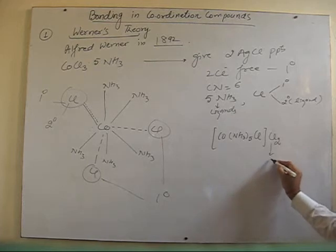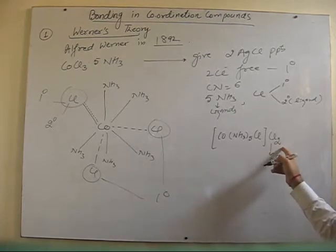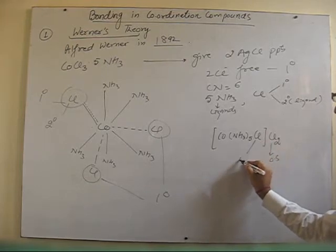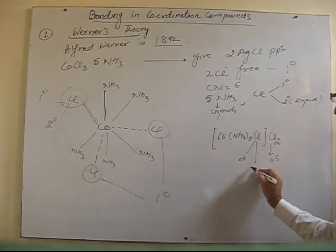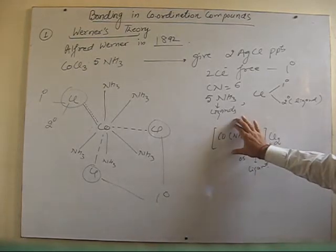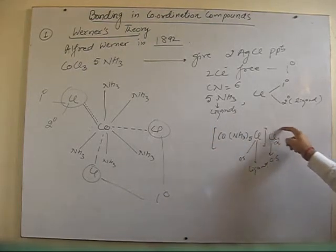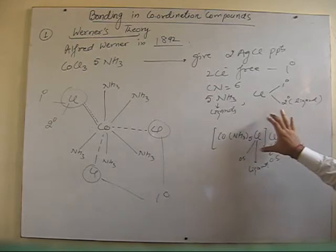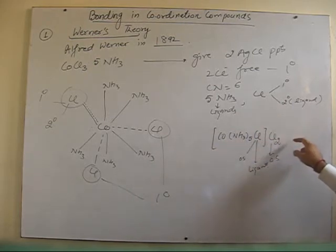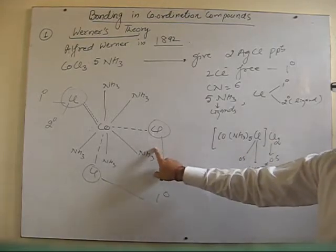The 2 Cl outside are satisfying only the oxidation state due to their charge, while the 1 Cl inside is satisfying the oxidation state as well as acting as a ligand. The part which remains outside the bracket — the coordination sphere — will dissolve in water and give free ions. This is the representation for this particular complex.